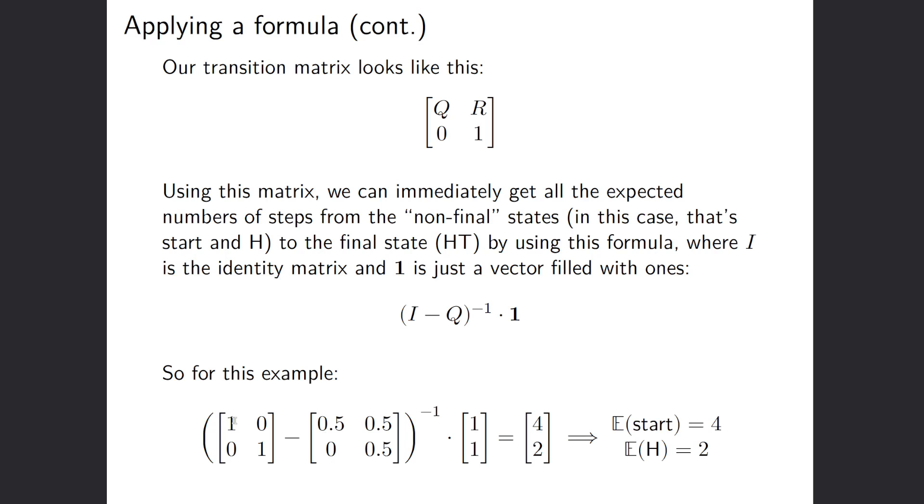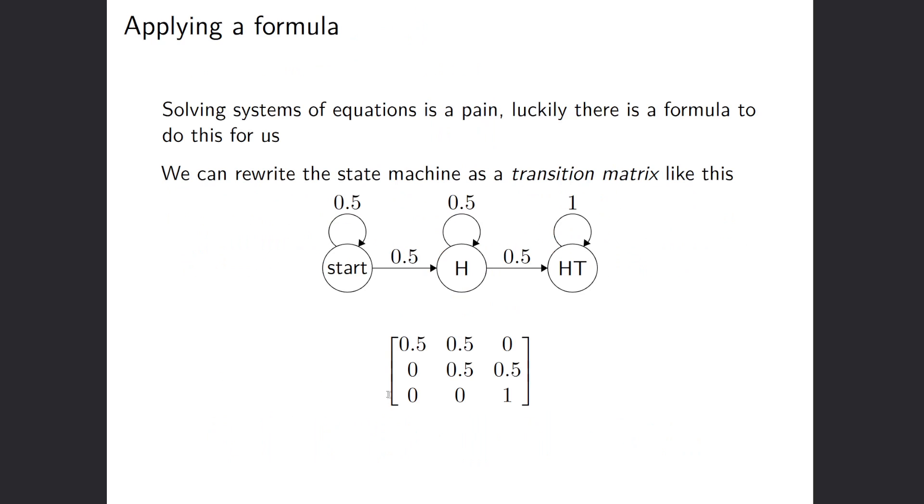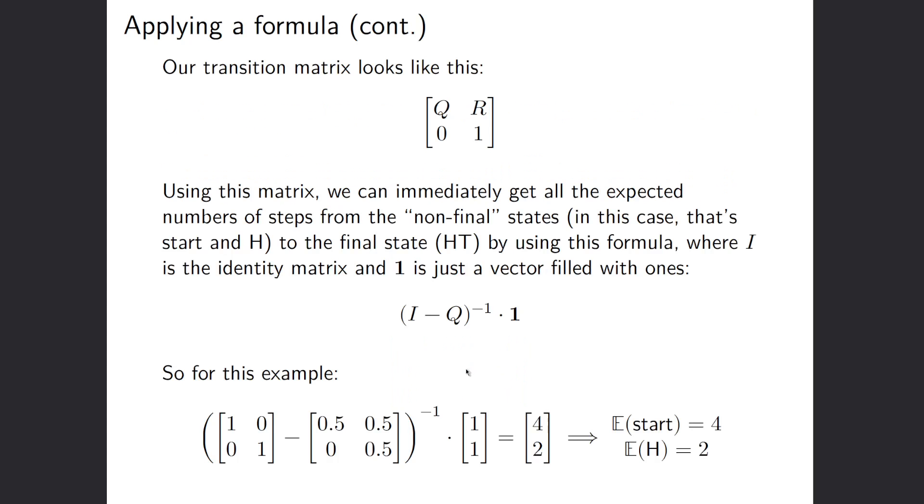So for this example, remember q is just 0.5 0.5 0.5, so that's what this is here, and then identity matrix is just the matrix with ones along the diagonal and zeros everywhere else. Here we want it to have the same dimensions as q, so q is a 2 by 2 matrix, so we want i of 2, which is going to be this matrix right here, and then we're going to multiply that by the ones vector, we want that to be of dimension 2 as well.